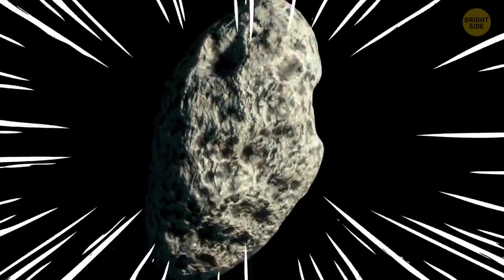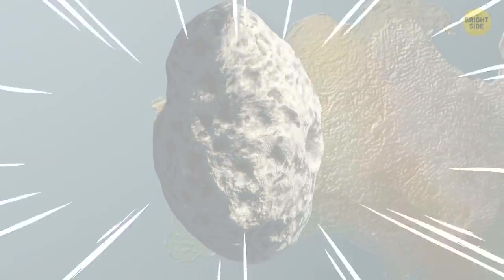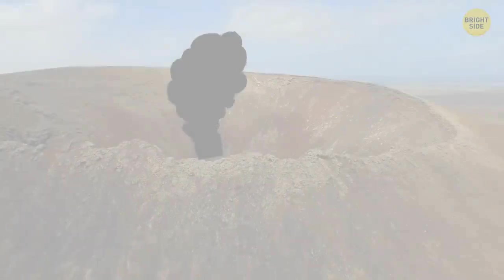On September 28, 1969, a meteorite about the weight of a moped fell on the small town of Murchison, Australia.